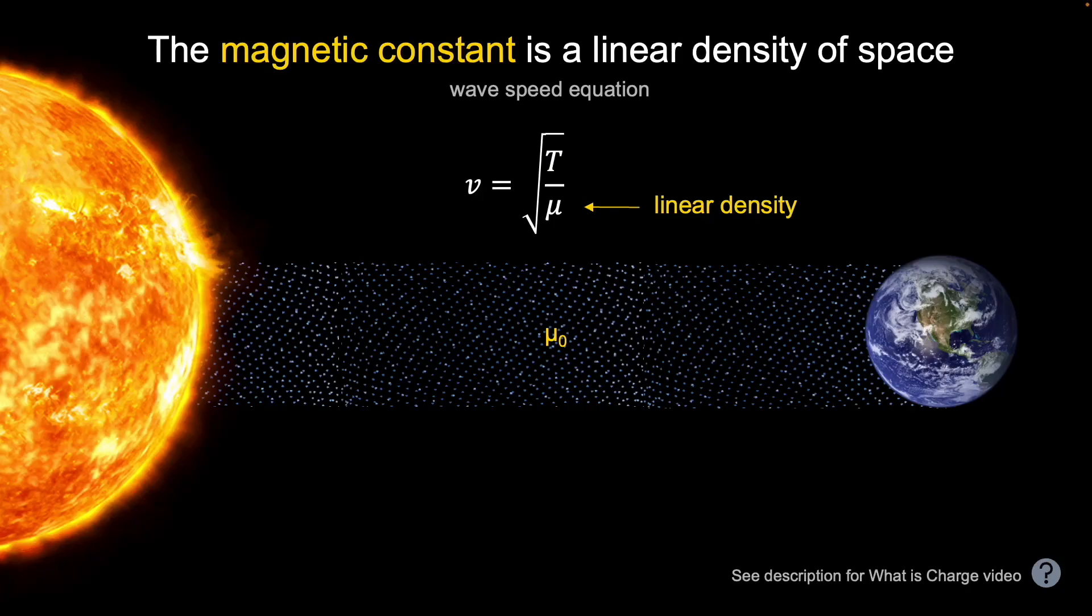In the previous section, we calculated an ether density. Then the magnetic constant appeared in one of those equations as a linear density. So, let's take the wave speed equation for a string from earlier, and let's put the magnetic constant in the denominator where the linear density was. This is not a surprise, because the magnetic constant has been used in electromagnetic equations as the permeability of free space. But refer to the linked video to derive units into a linear density, because that part is new.